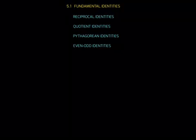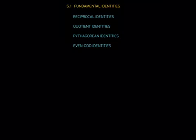All right, everybody, we're starting Chapter 5, Section 1: Fundamental Identities. Here are your fundamental identities so far in this class: reciprocal identities, quotient identities, Pythagorean identities, and even-odd identities. We've covered all of these in earlier parts of the text. You may want to look them up, or you can find a summary on page 197 of your textbook. In Chapter 5, we're going to be adding a whole lot of identities to this list, so put your seatbelt on — it's going to be fun.